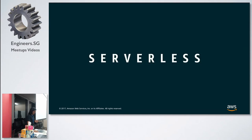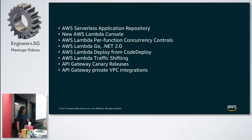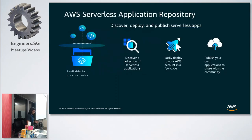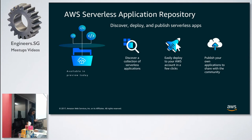Moving to serverless — we have a bunch of updates. First is the AWS Serverless Application Repository, a new Lambda console, per-function concurrency controls, AWS Lambda Go runtime and .NET support, Lambda deployments via CodeDeploy with traffic shifting and canary releases, and private VPC integrations. With the Serverless Application Repository you can create your own Lambda functions, package them using SAM, and push them to the repository so you can publish them over the cloud with public access.